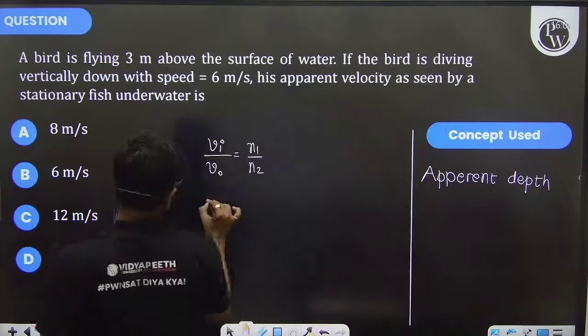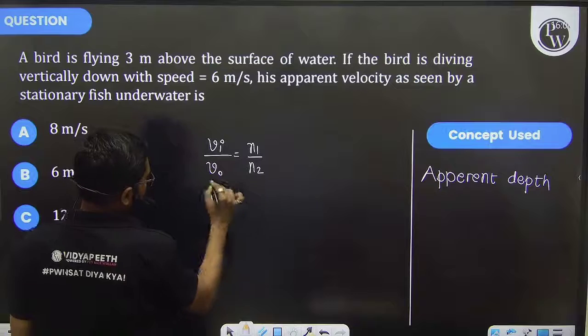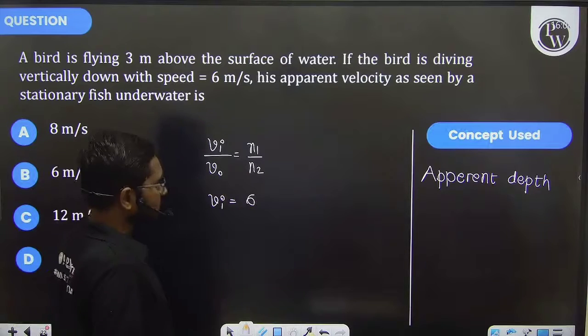The fish will see v_0, which equals 6 times 4/3, because n1 is the refractive index of the observer, which is the fish.